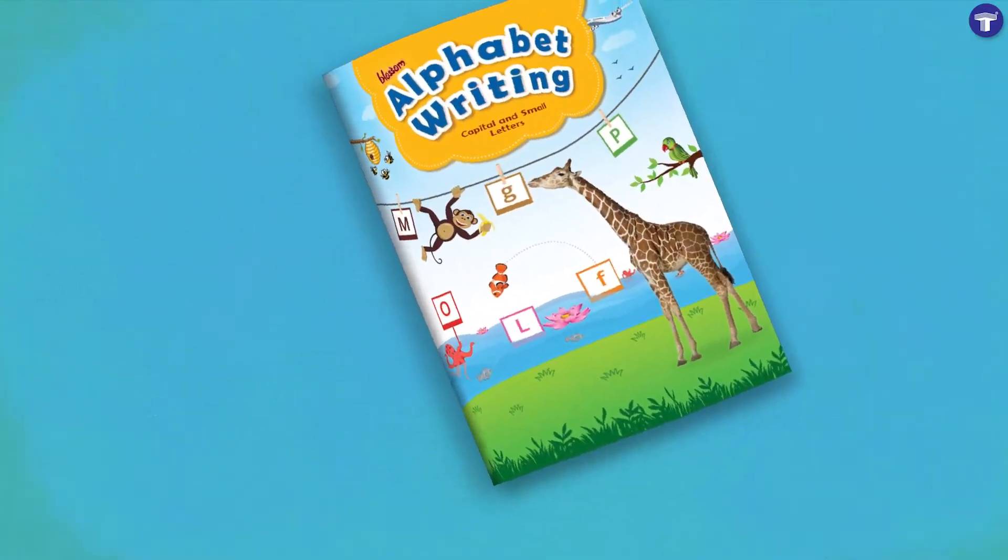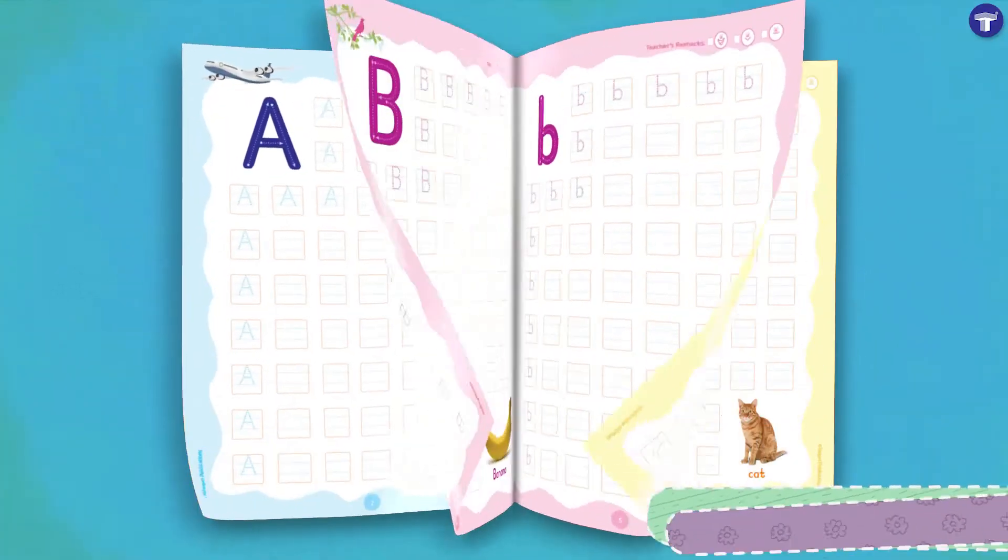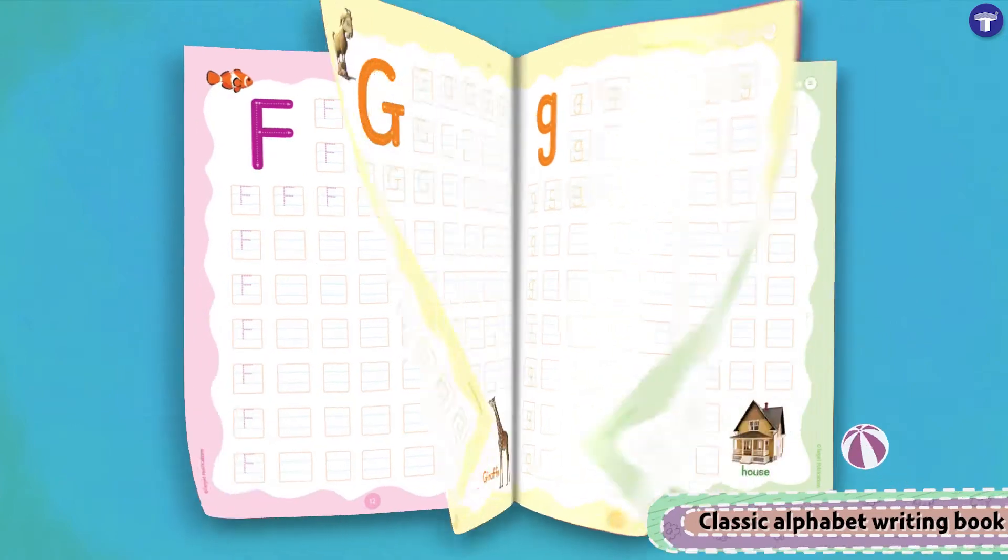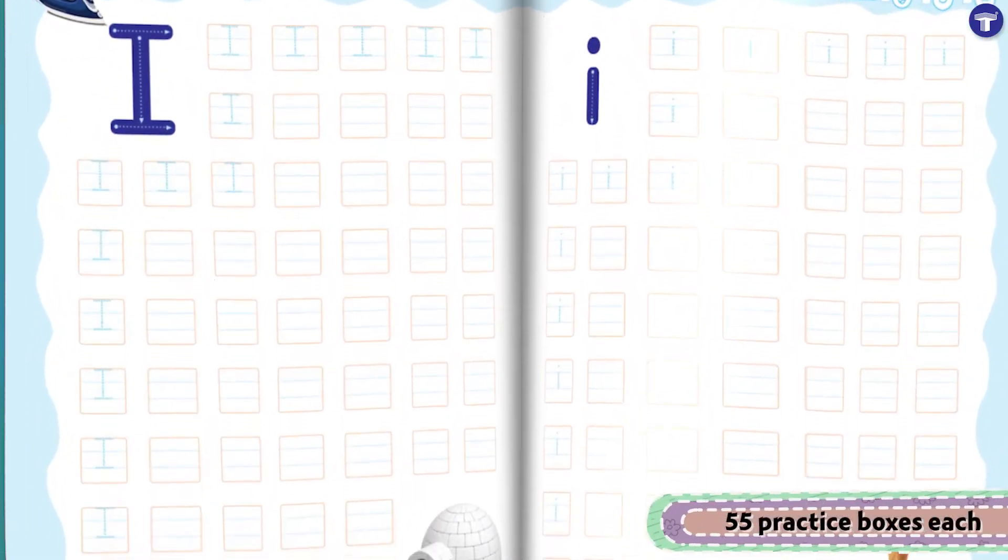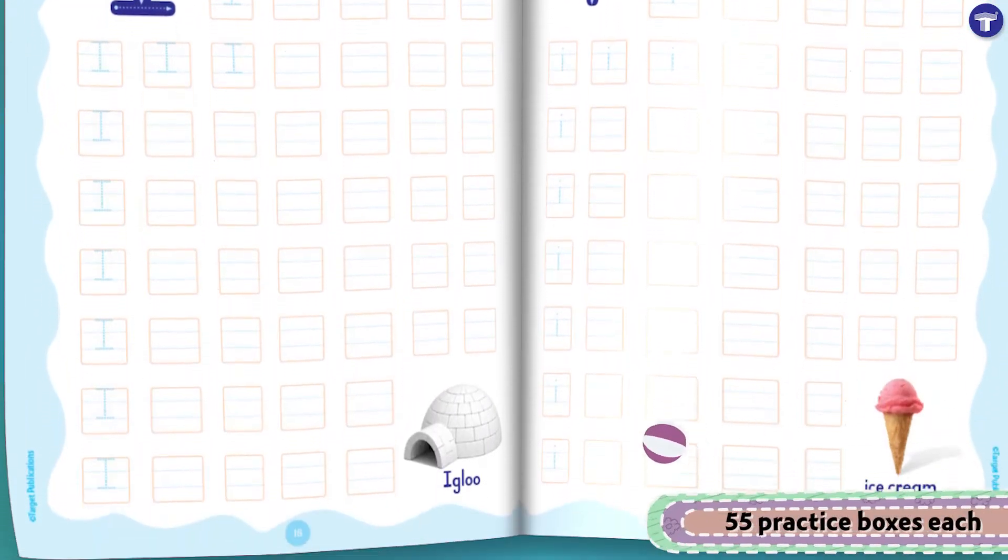Blossom Alphabet Writing Capital and Small Letters is a classic alphabet writing book that includes 55 practice boxes each for the capital and small letter.